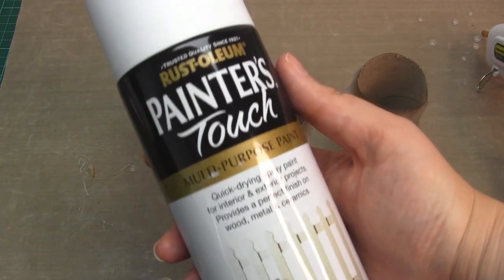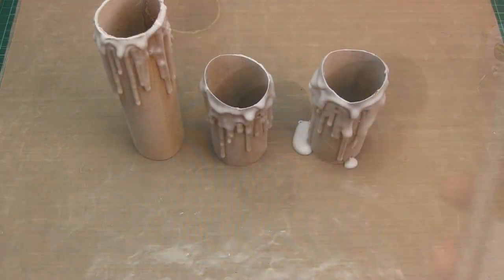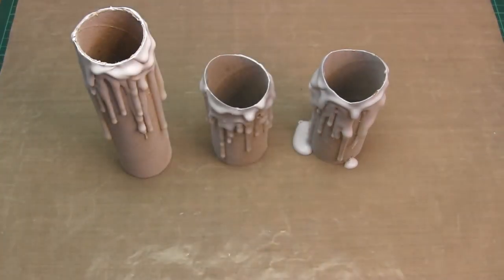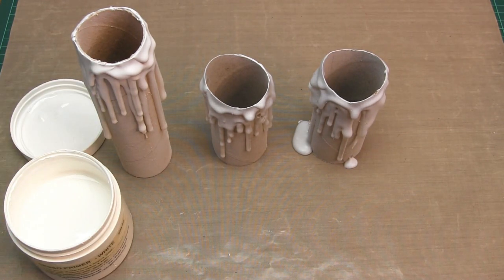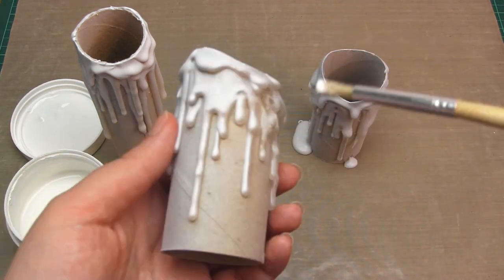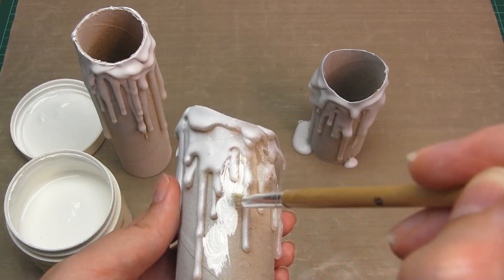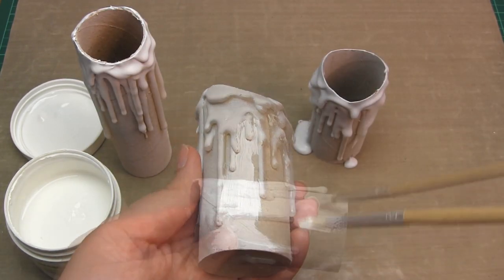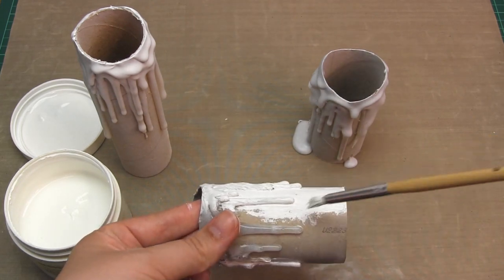Next, paint the candles. Spray paint won't cover the tubes well on its own, so first apply white gesso as a base layer using a paintbrush. You can substitute another white primer if preferred.